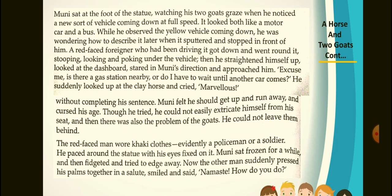Muni sat at the foot of the statue watching his goats graze when he noticed a new sort of vehicle coming down at full speed. It looked both like a motor car and a bus. While he observed the yellow vehicle coming down, wondering how to describe it later, it sputtered and stopped in front of him. A red-faced foreigner who had been driving it got down and went round it, stooping, looking and poking under the vehicle. Then he straightened himself up, looked at the dashboard, steered in Muni's direction and approached him.